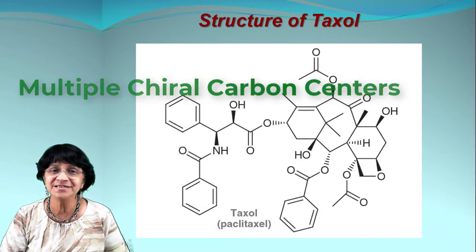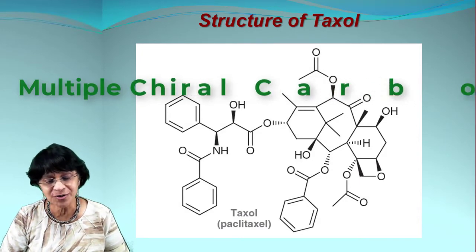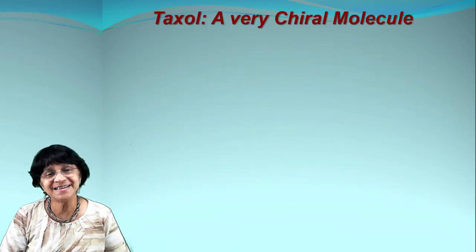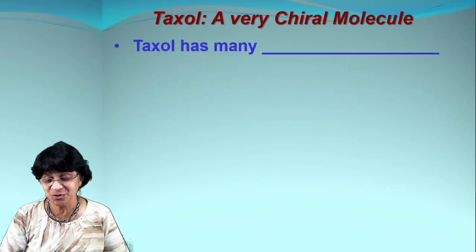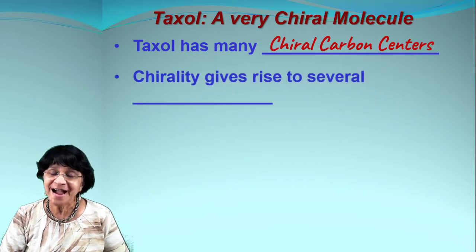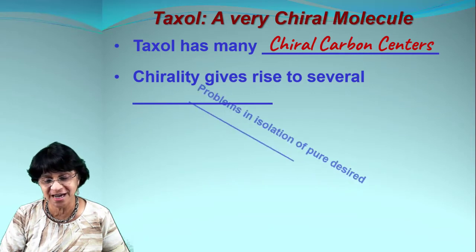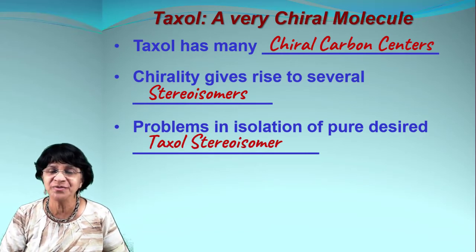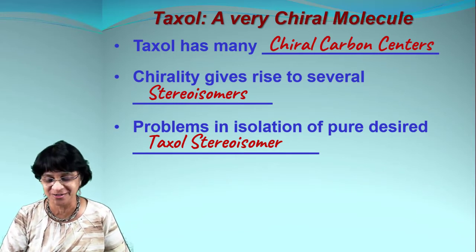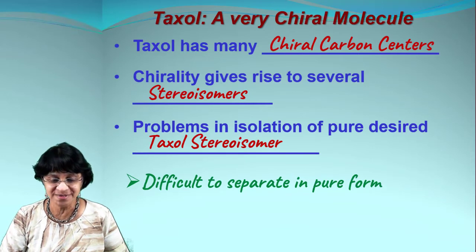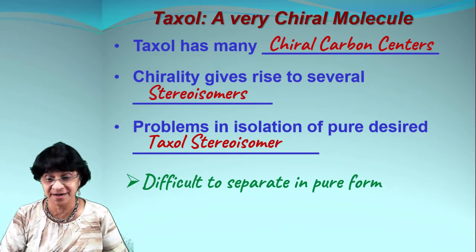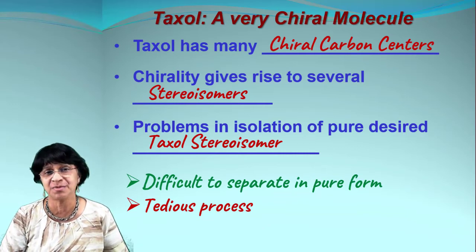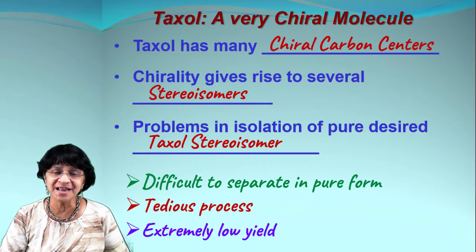Taxol's structure is very complex with many chiral carbon centers, giving rise to stereoisomers, and it also has multiple functional groups discussed in a separate video. The main challenge is how to identify and isolate the pure desired taxol stereoisomer. It is difficult to separate, is a very tedious long process requiring multiple steps, and gives extremely low yield.